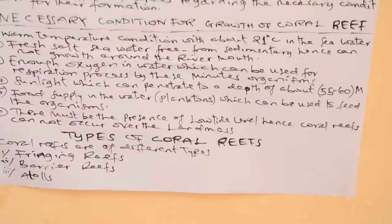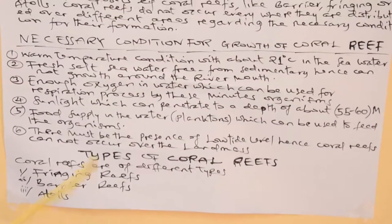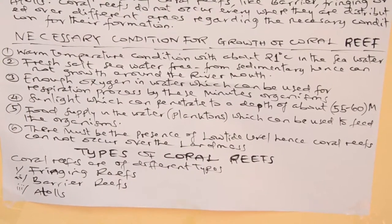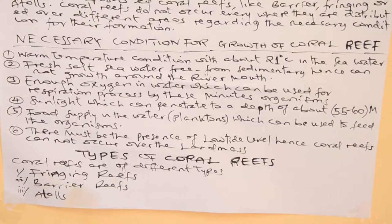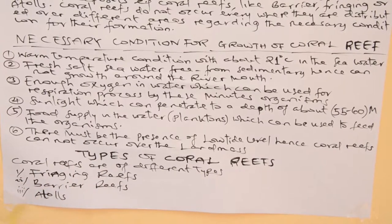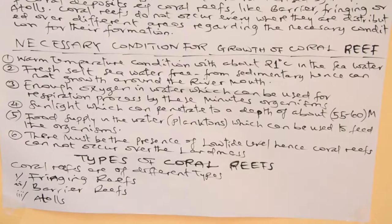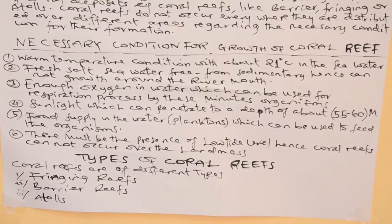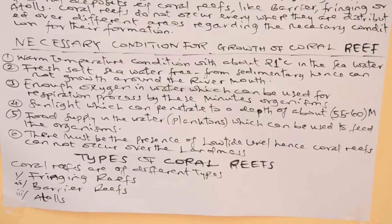Dear students, this coral coast consists of three types. Hence, the types of coral reefs are analyzed as below. Firstly, there is fringing reefs, barrier reefs, and atoll reefs. You have to be keen so as to understand the structure and the difference between these three types.